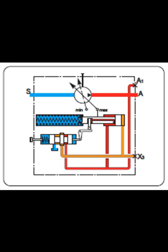LRD Constant Power Control Variation — integral pressure cutoff, fixed setting D. The pressure cutoff is in effect a constant pressure control which swivels the pump back to VG min when the preset working pressure is reached. This function overrides the constant power control, i.e., the constant power control is effective below the preset working pressure. The valve is integrated into the control housing and is set in the factory to a fixed pressure within the range 200 bar to maximum 350 bar.